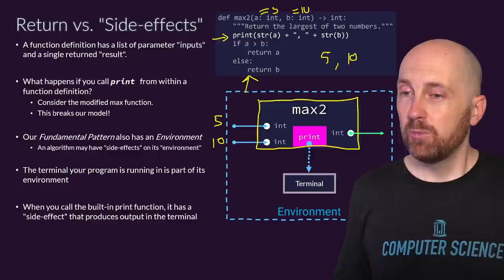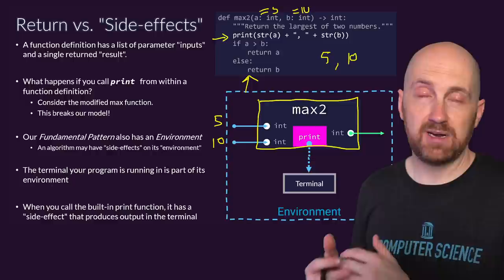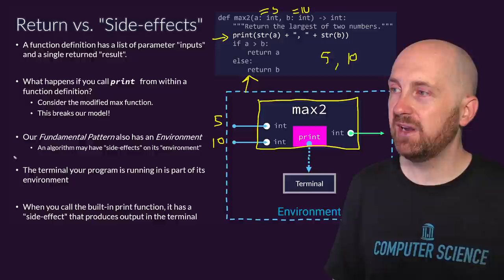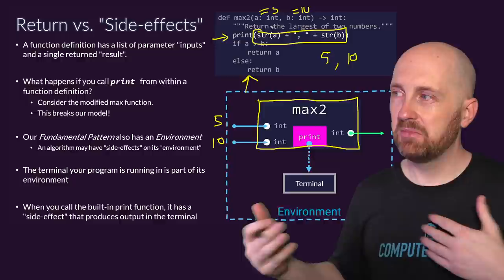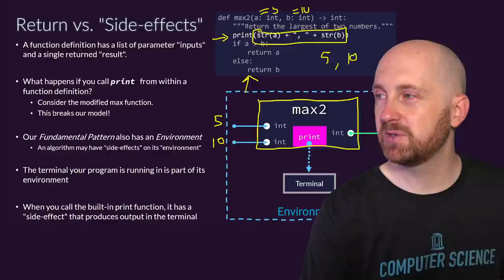When we have side effects, those are not results we can use somewhere else in our program. If we print this string, we can't use that concatenated string anywhere else in our program without reproducing that expression again. This is data that gets sent to the terminal and then it's done — we don't have anything else we can do with it.